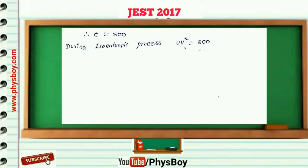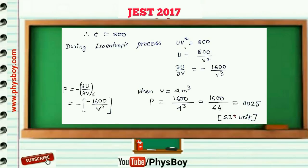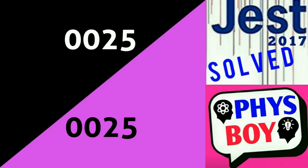Pressure P = −(∂U/∂V)_S = 1600/V³. When the volume becomes 4 m³, pressure = 1600/4³ = 1600/64 = 25 Pa. The final answer is 0025.